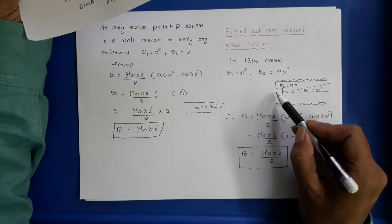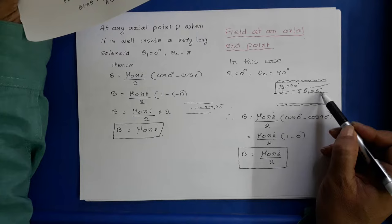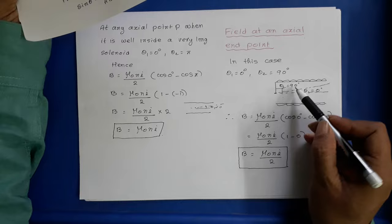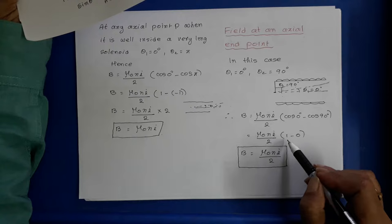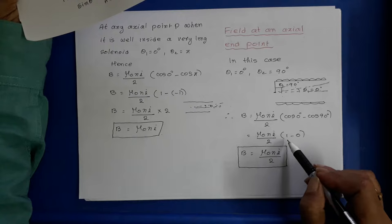Case 2: Field at an axial end point of the solenoid. Here θ₁ = 0 and θ₂ = 90°. Substituting: cos0 − cos90° = 1 − 0 = 1. So B = μ₀nI/2. This is the magnetic induction at an axial end point.